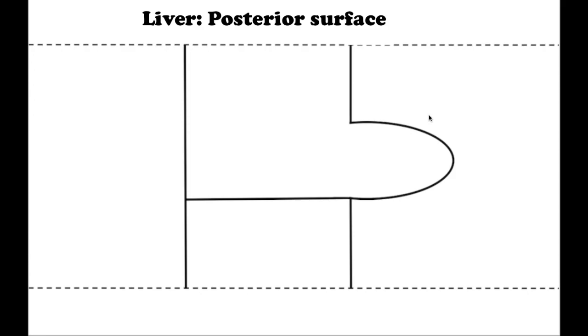Hi everyone, it's Schematic Matt and today we are going to talk about the visceral or posterior surface of the liver schematically. The liver possesses three surfaces: superior, inferior, and posterior.